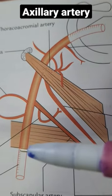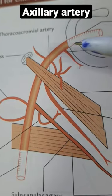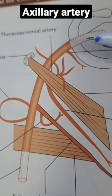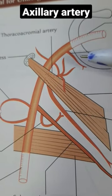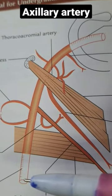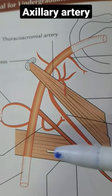The axillary artery is the main artery of the axilla. It is a continuation of the subclavian artery at the outer border of the first rib and continues as the brachial artery at the lower border of teres major muscle.